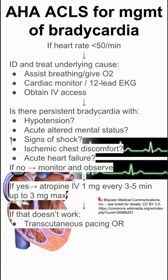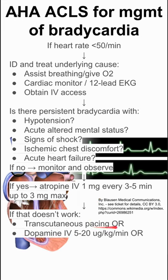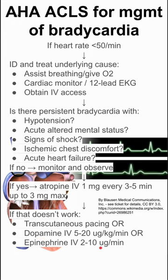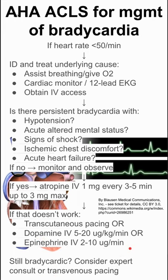If that doesn't work, you can transcutaneously pace the patient. Alternatively, you can give dopamine 5-20 micrograms per kilogram per minute, or you can give epinephrine 2-10 micrograms per minute.